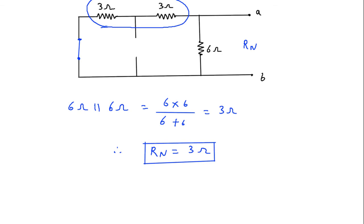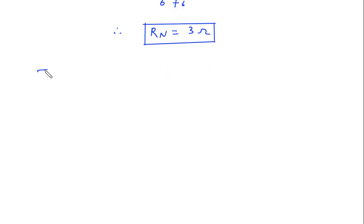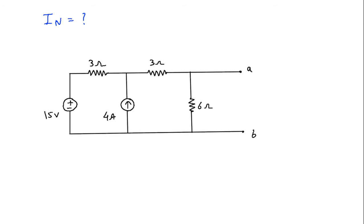Next we have to find In. To find In, short circuit terminal AB. So this will be short circuited and this will be our current In. So when we short circuit this terminal A and B, this 6 ohm resistor will become 0. This 6 ohm resistance will become 0.